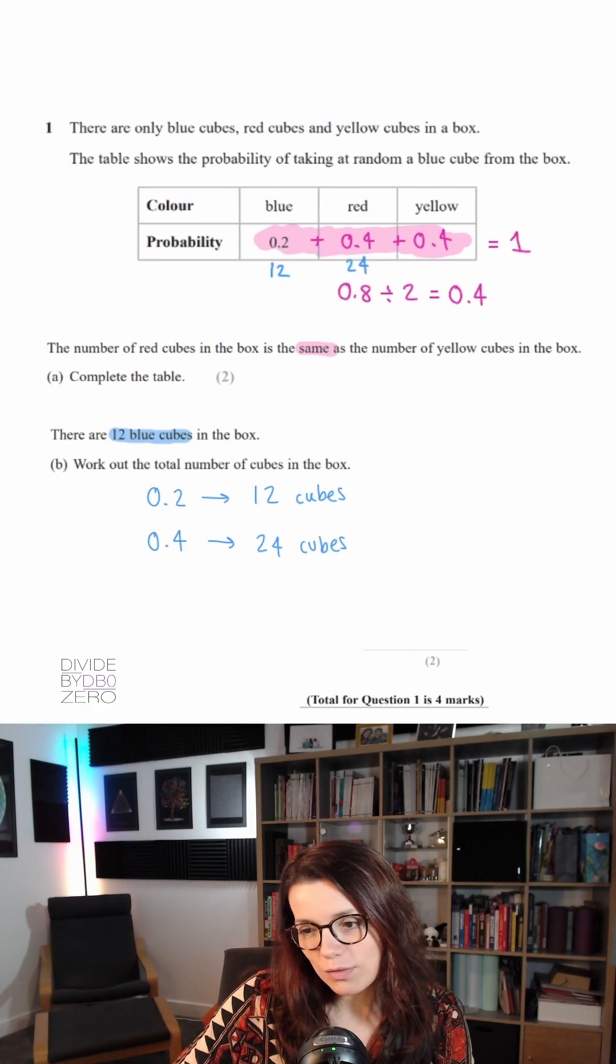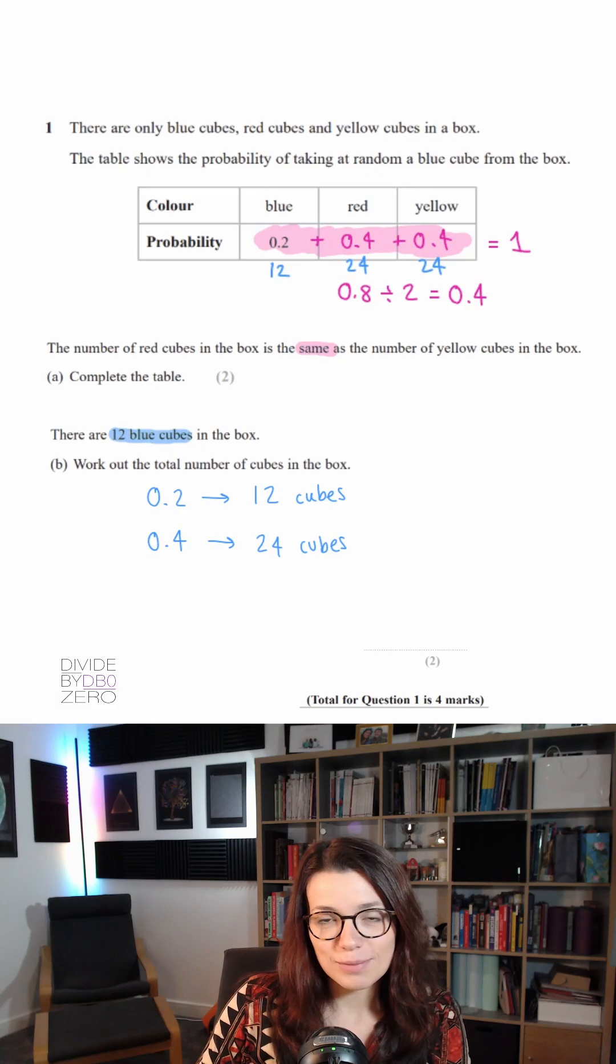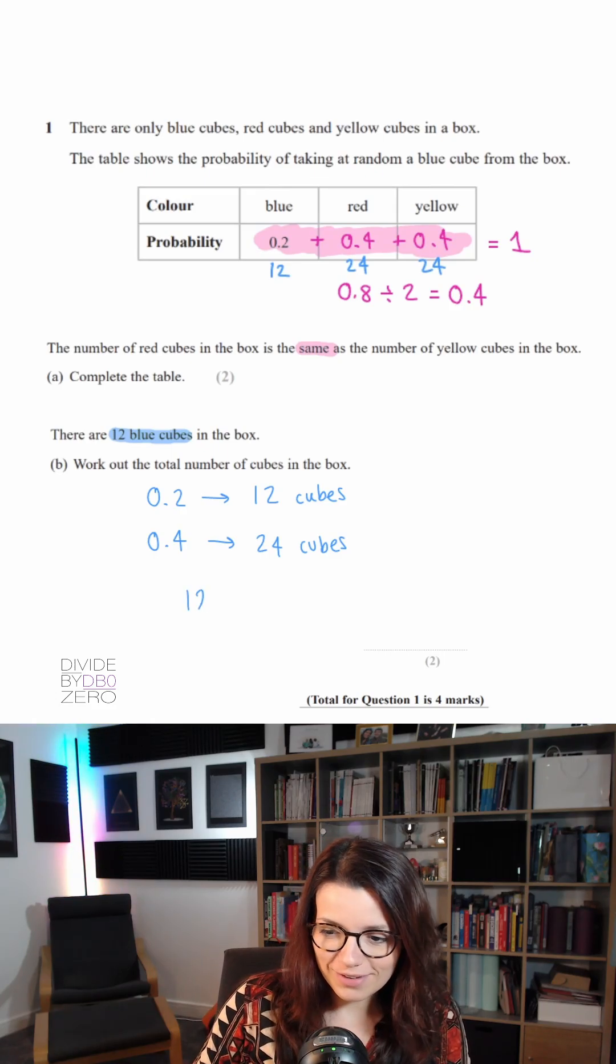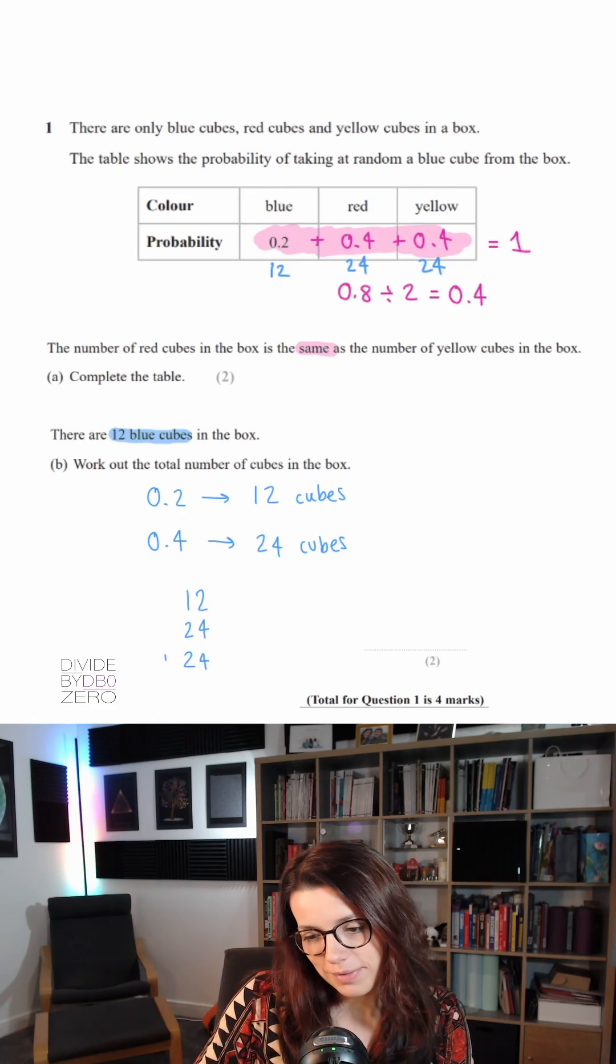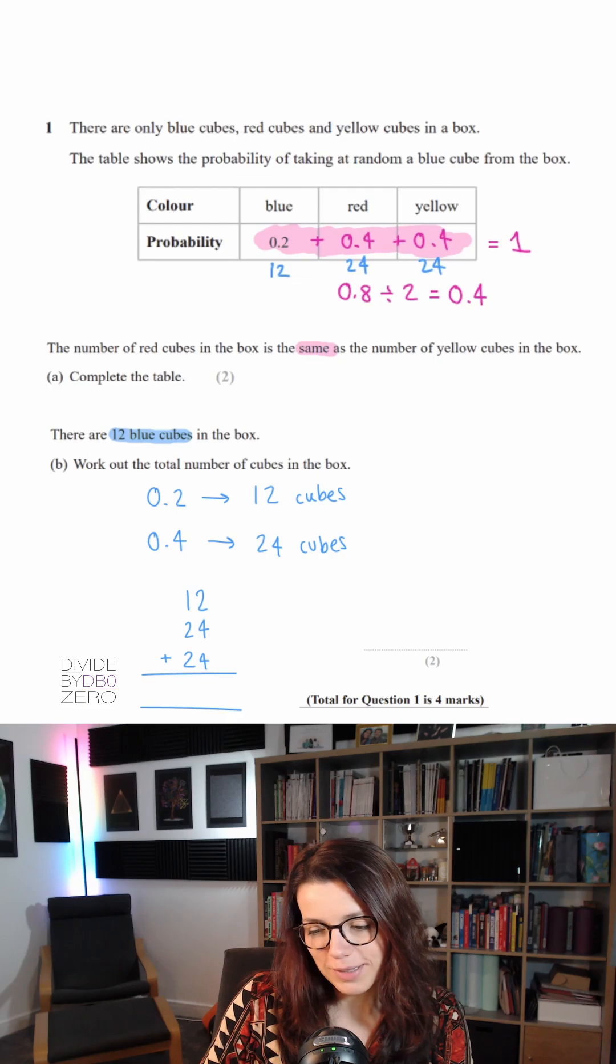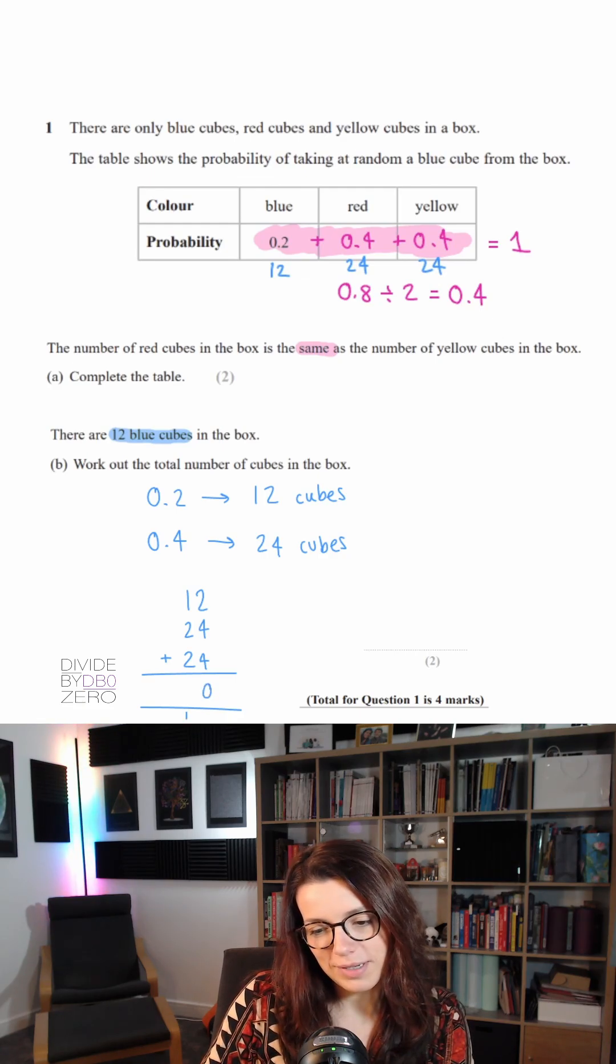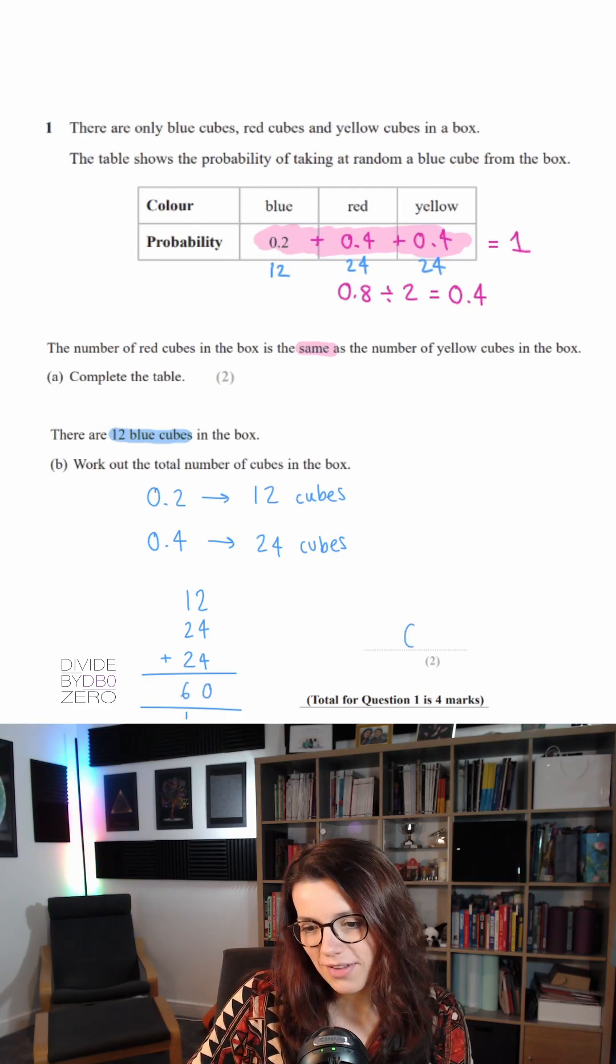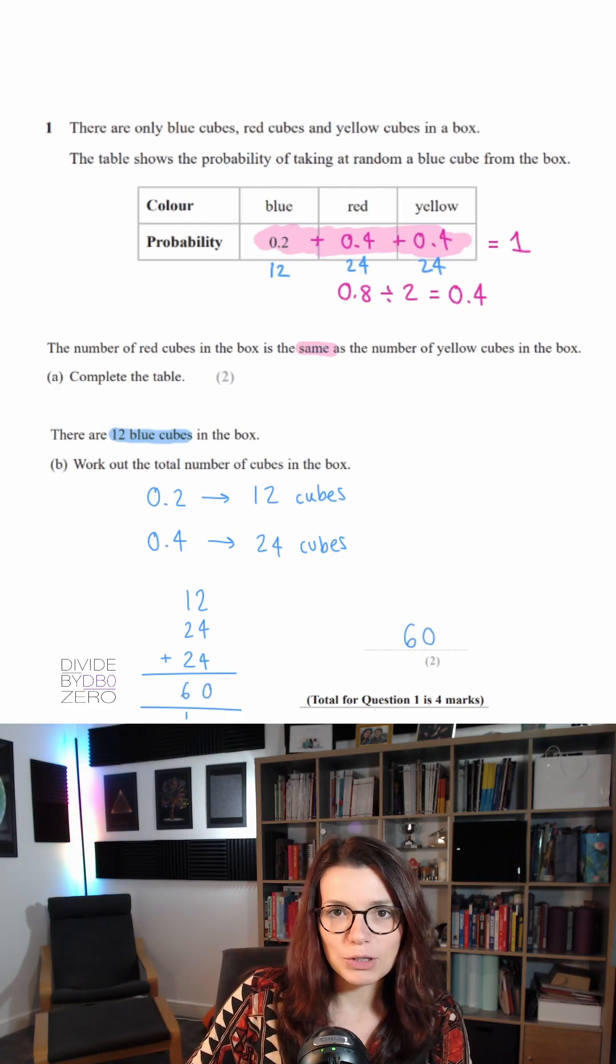That means there are 24 red cubes and 24 yellow cubes, so now all we have to do is add them all together. Now this question is from a non-calculator paper so you could add them up using column addition if you like. 2 plus 4 plus 4 is 10. 1 plus 2 plus 2 plus 1 is 6. So altogether there are 60 cubes in the box.